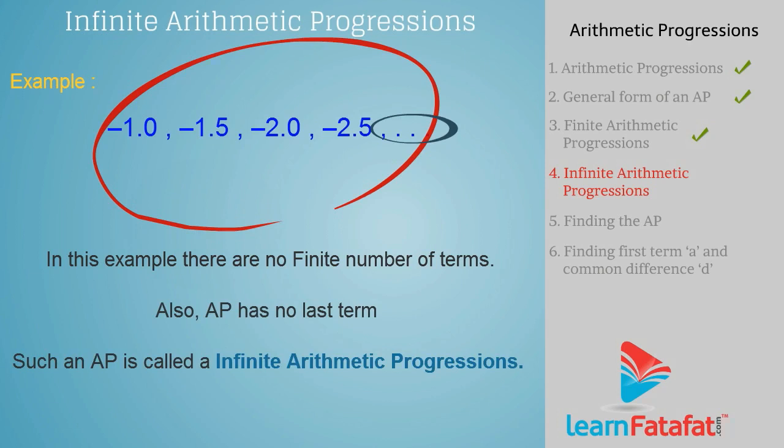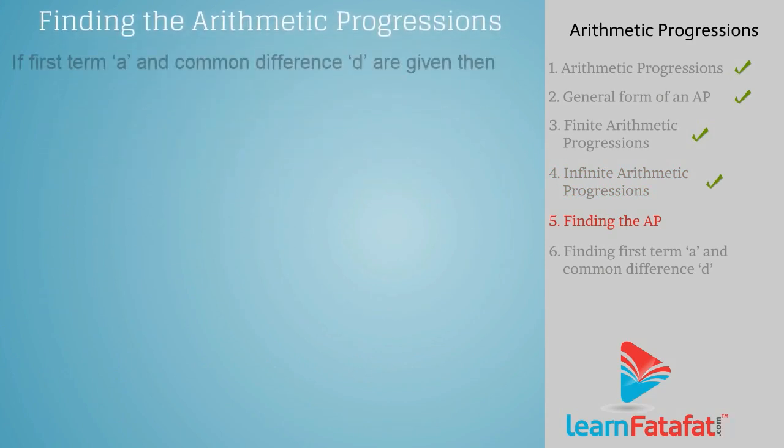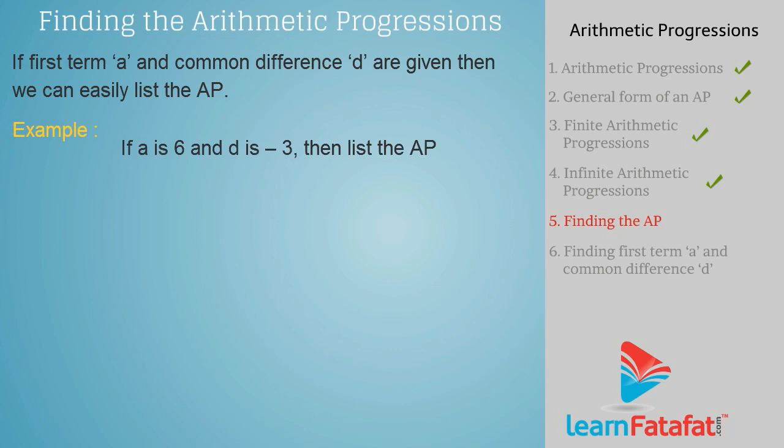Finding the AP. If first term A and common difference D are given, then we can easily list the AP. Example: if A is 6 and D is minus 3, then list the AP.